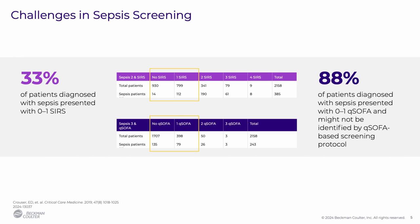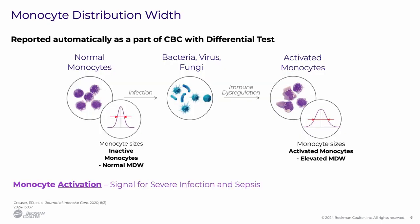For example, in the pivotal trial for MDW, of over 2,100 patients who presented to the emergency department, 33% of patients diagnosed with sepsis presented with less than two SIRS criteria. 88% of the same patient population had a qSOFA score of less than or equal to one.